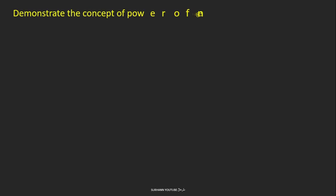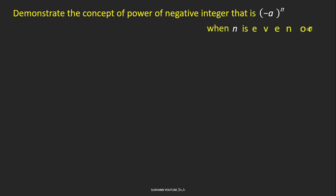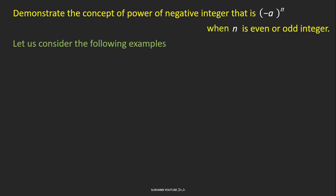Now let us understand the concept of the power of a negative integer. Here 'a' is a negative integer and n is an even or odd integer. Consider the example: minus 3 to the power 2. This means minus 3 is multiplying two times. Always remember: when two opposite signs are multiplied, the answer is positive.